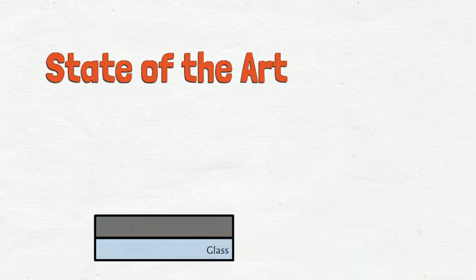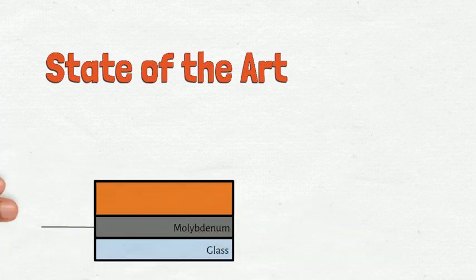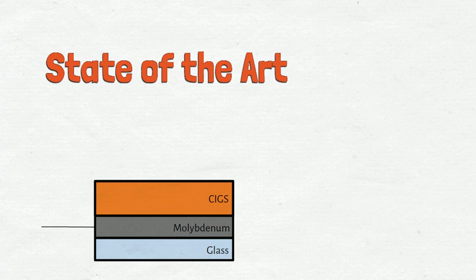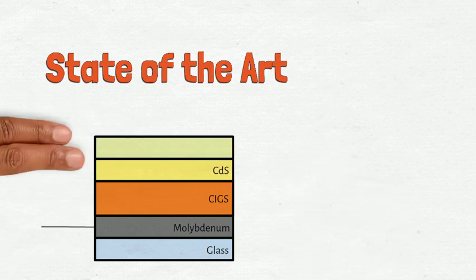The state-of-the-art cell consists of a glass substrate, a molybdenum back contact, a CIGS layer where the photon absorption and carrier generation take place, a cadmium sulfite buffer and a transparent zinc oxide window that acts as a front contact.